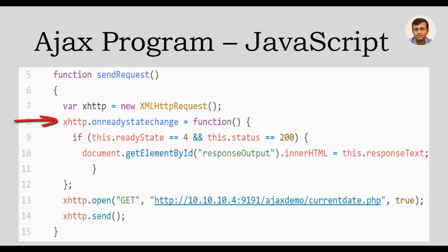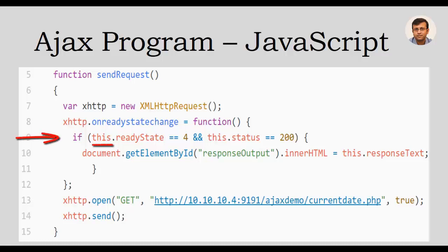On line 8, onreadystatechange is used and assigned to a function expression. onreadystatechange is an event handler which defines a function to be called when the readyState property changes, and it is also used to indicate when data becomes available. The function assigned to onreadystatechange uses the readyState property of the XMLHttpRequest object. On line 9, this.readyState is assigned the value 4, which indicates that the data is completely available.